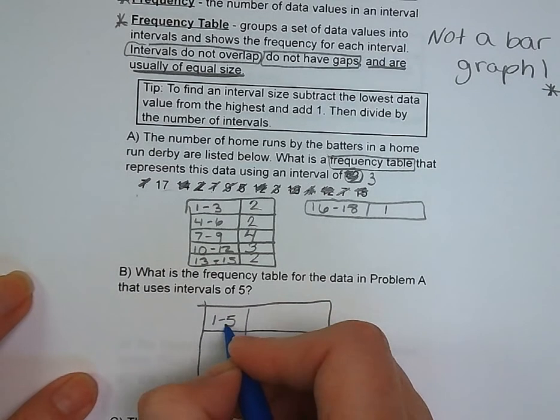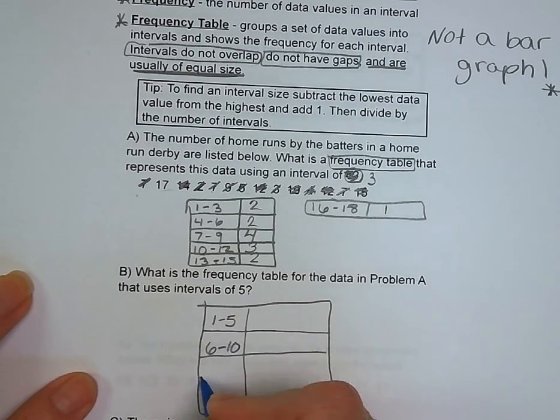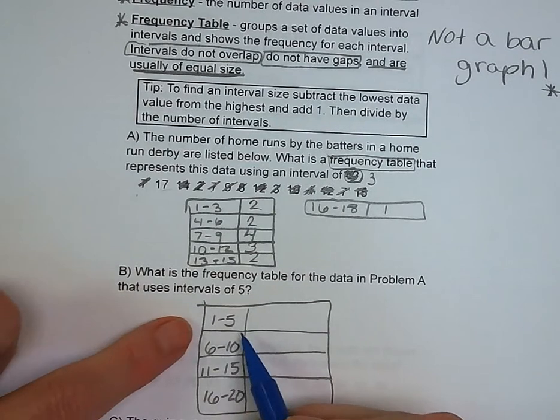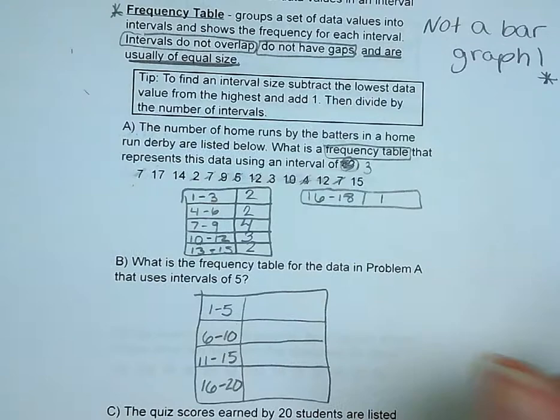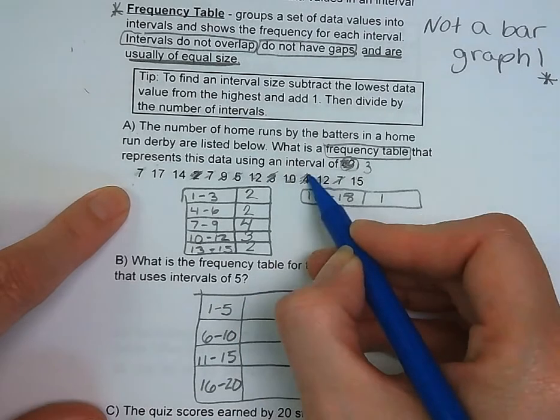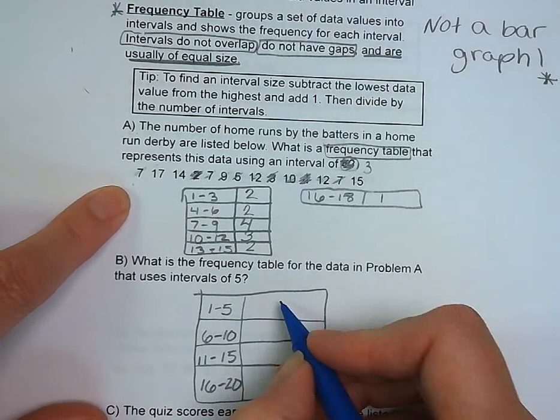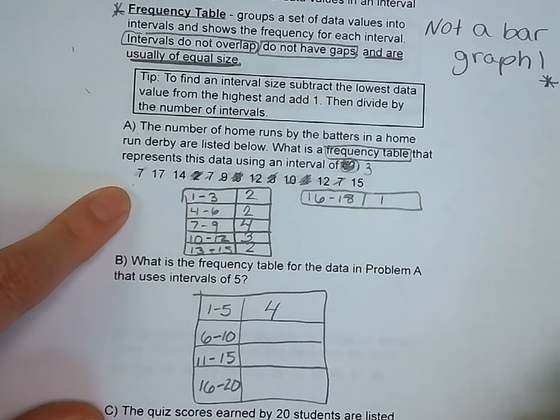Let's look at the same data, and we want to figure out what would the frequency table look like if our interval was 5 instead of 3. So we set it up. We've got 1 through 5, 6 through 10, 11 through 15, and 16 to 20.